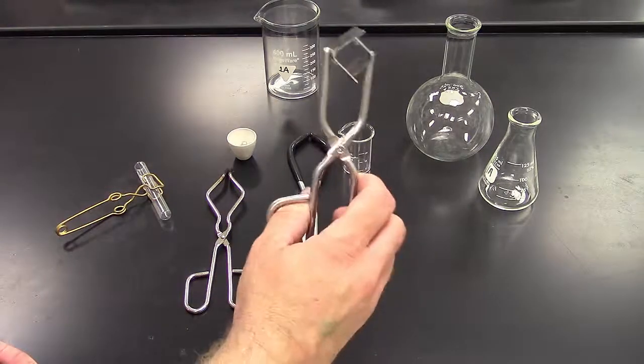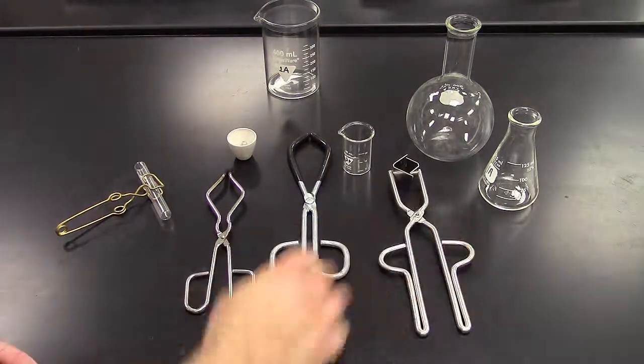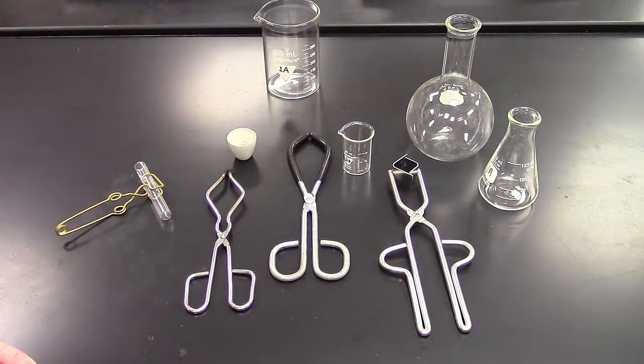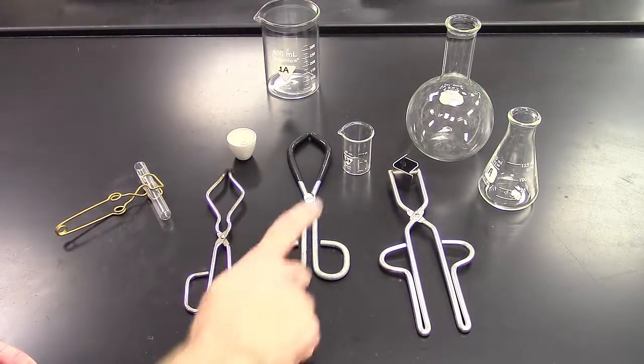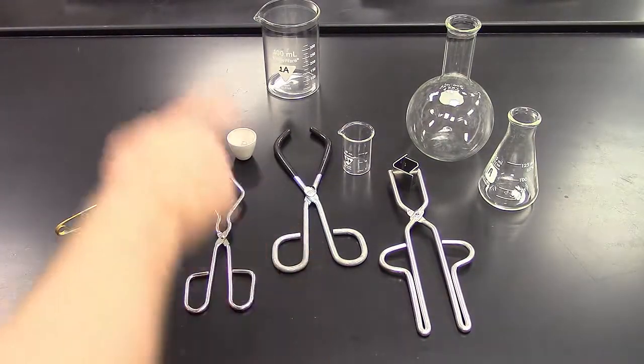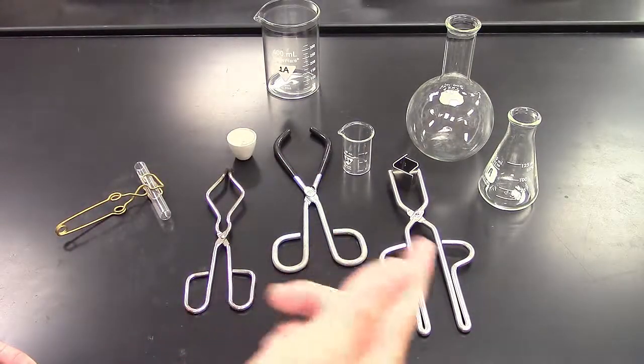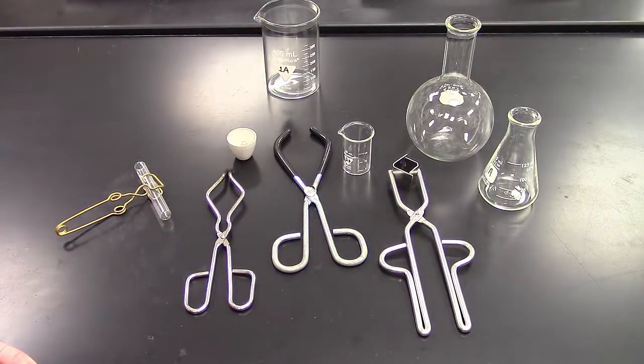For instance, if it's really narrow, you can hold it with this. Make sure you get these names down because in lab we may ask you, hey, make sure you have a flask tong out anytime you have a flask that's on the hot plate, for instance, or a beaker tong if you're dealing with hot beakers.